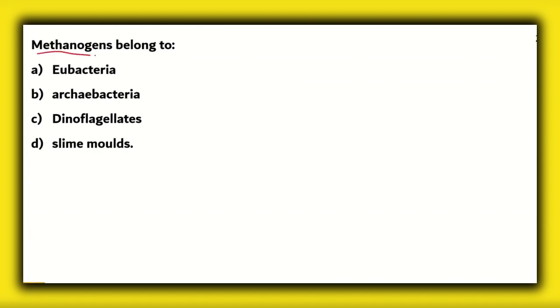Next question. Methanogens belong to? Eubacteria, Archebacteria, Dinoflagellates, Slime Molts. So, what are methanogens? Methanogens are bacteria that produce the gas methane. And these are normally found in the guts of ruminants. So, ruminants are those animals which chew their food after digesting it for some time in the stomach.